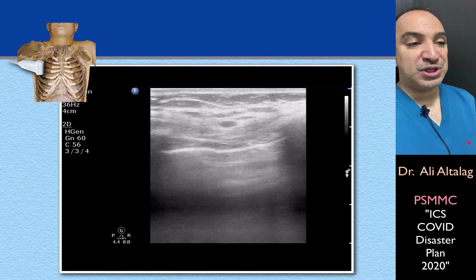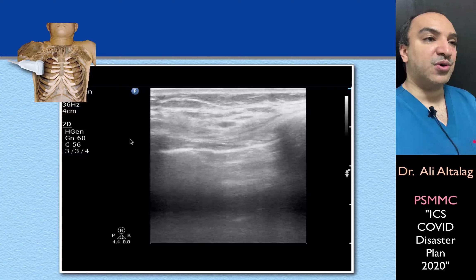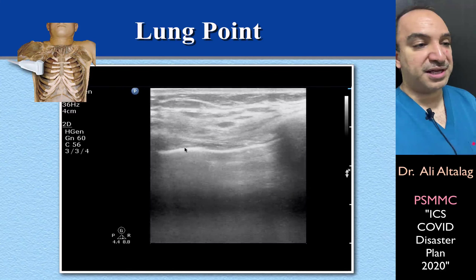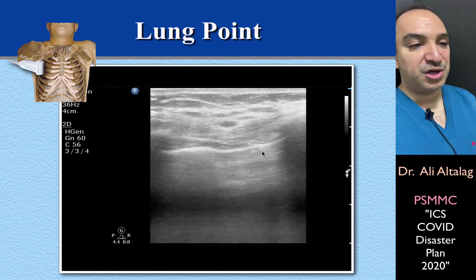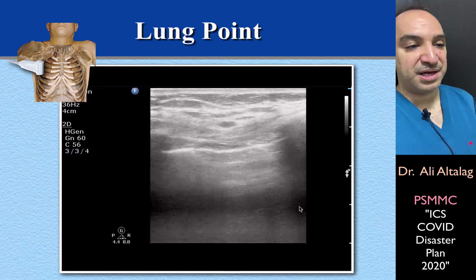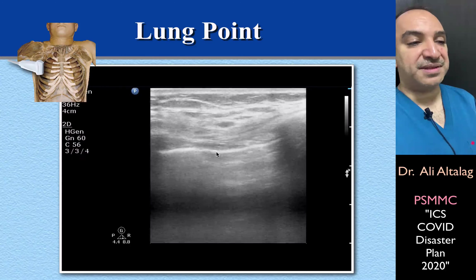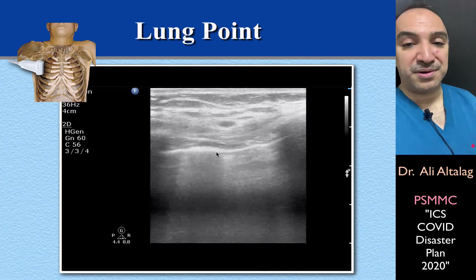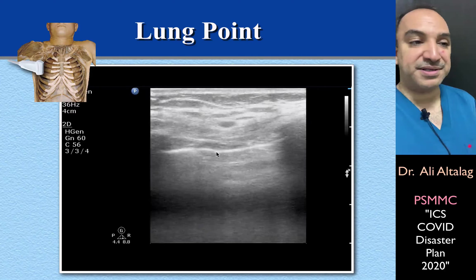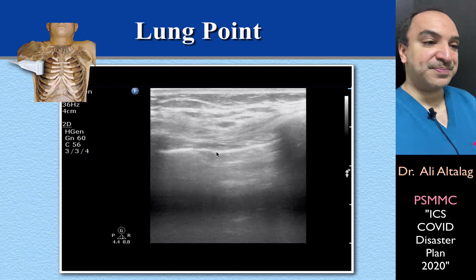The most reliable sign for pneumothorax is the lung point, where you see sliding on one side and no sliding on the other side, B-lines on one side and no B-lines on the other side. This is the lung point — it marks where the pneumothorax starts and where the lung ends.